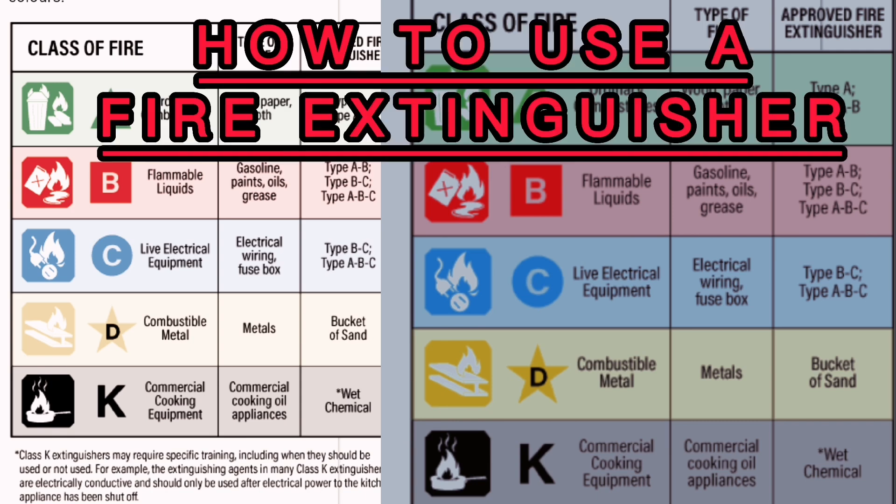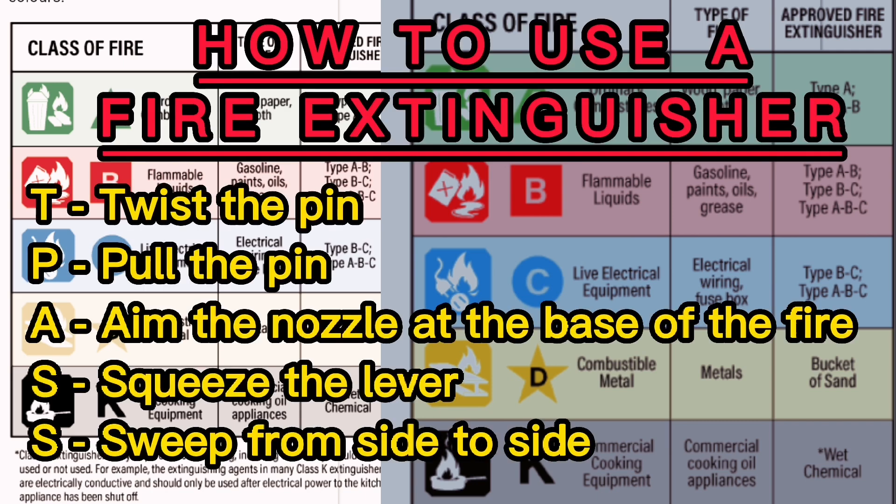Fire extinguisher — remember the acronym T-PASS: T — Twist the pin. P — Pull the pin. A — Aim the nozzle at the base of the fire. S — Squeeze the lever. S — Sweep from side to side.